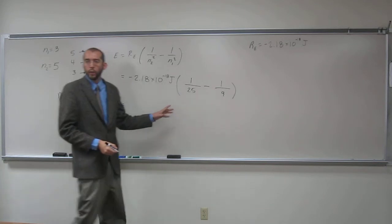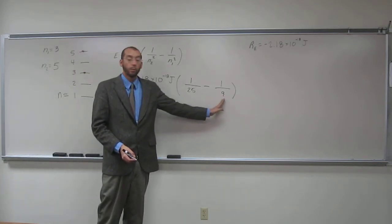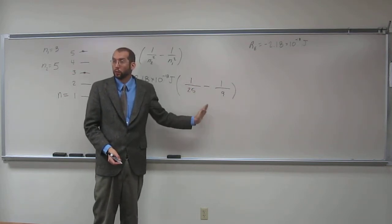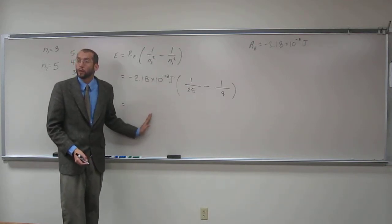So now hopefully you see, right, we have a smaller number subtracting a bigger number from it. So this overall is going to be a negative number. Multiply that by a negative number, we should get an overall positive number.